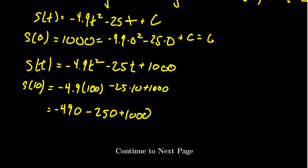If you take 1000 and take away 250, that's 750. Then we have to take 490 away from 750. That's going to end up with 260. So we see that after 10 seconds, the ball will be 260 meters above the ground.